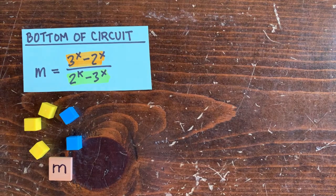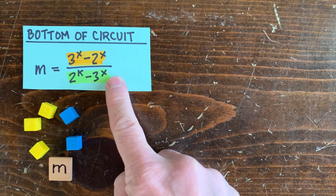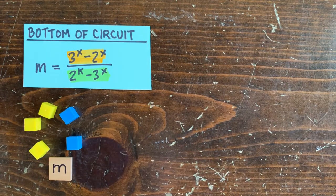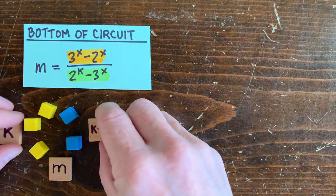We want to show that there's no circuit loops. That means showing that 3 to the x minus 2 to the x is never divisible by 2 to the k minus 3 to the x for any k and x.